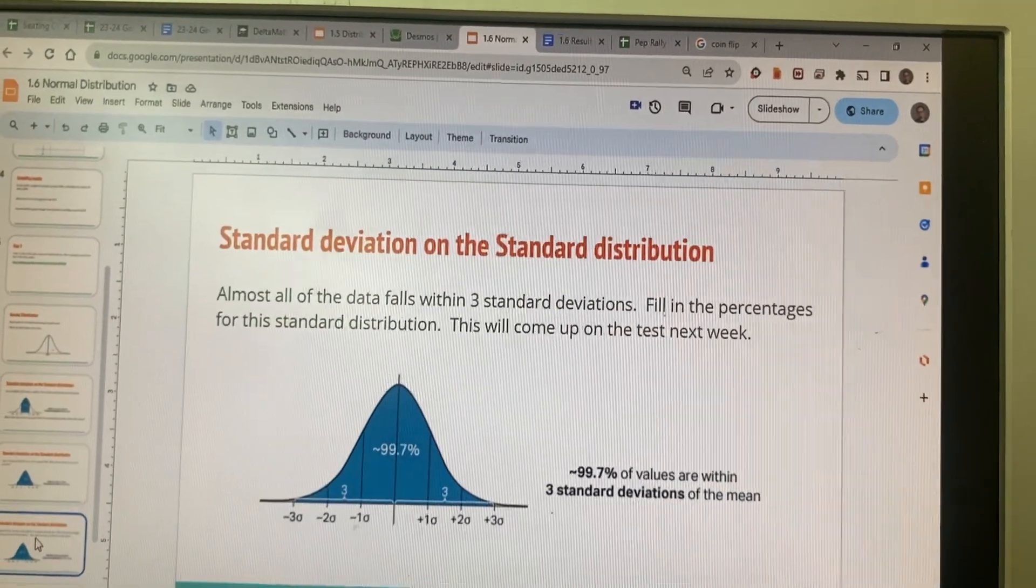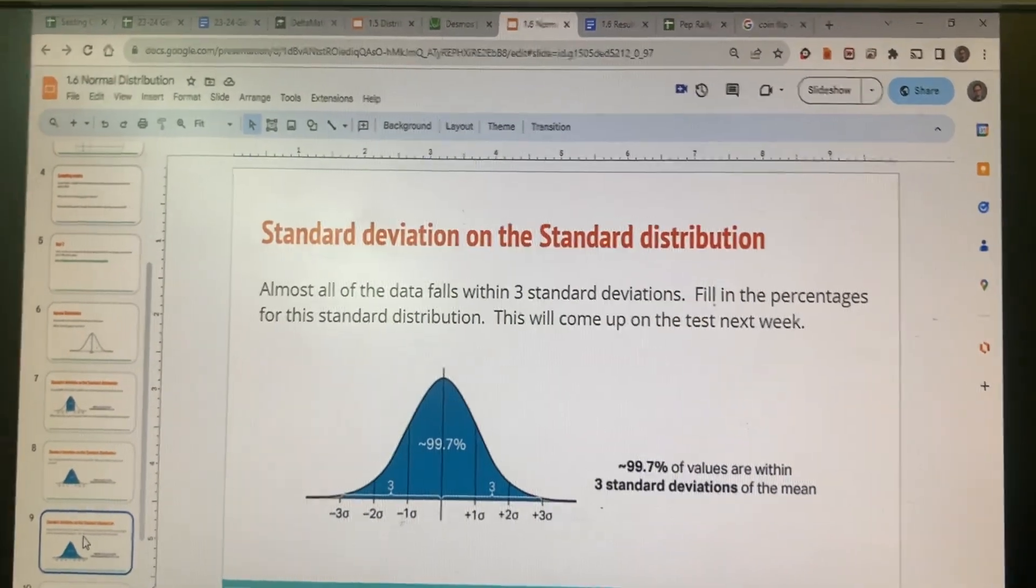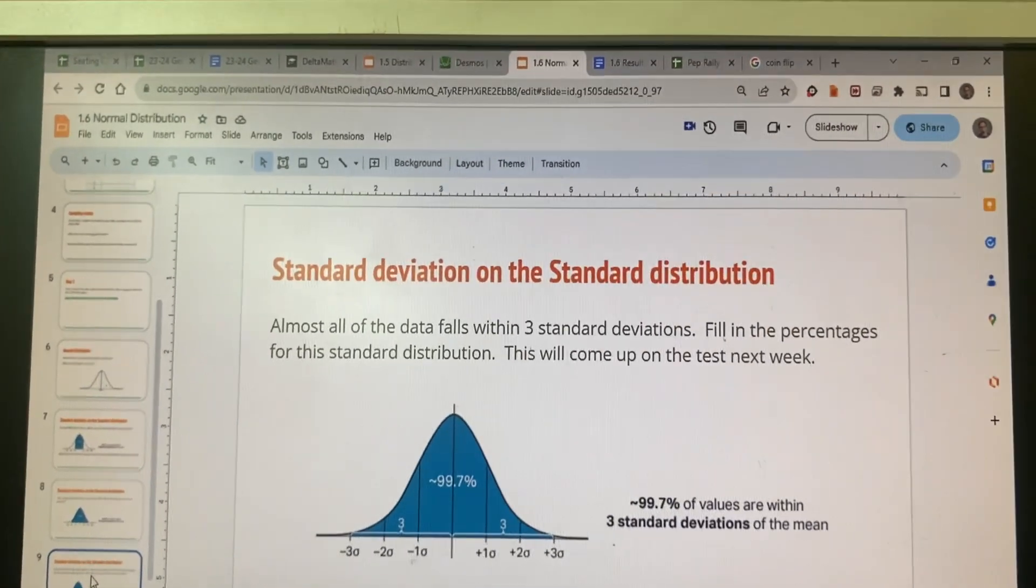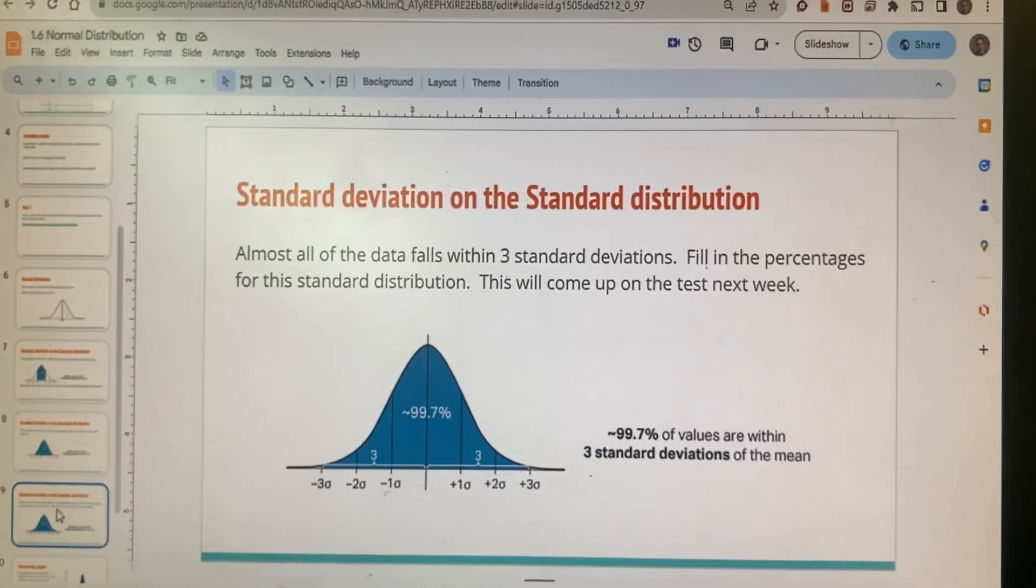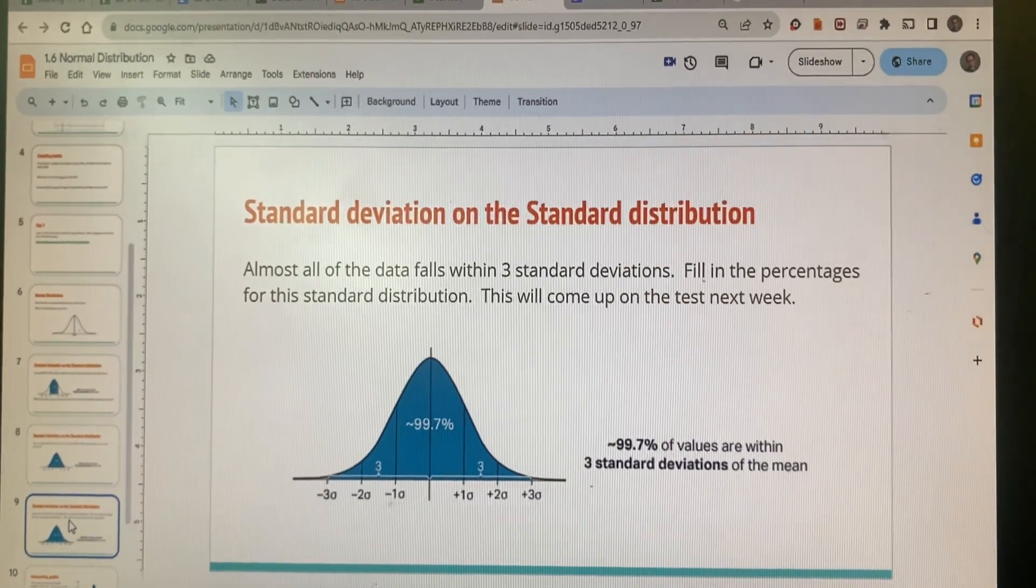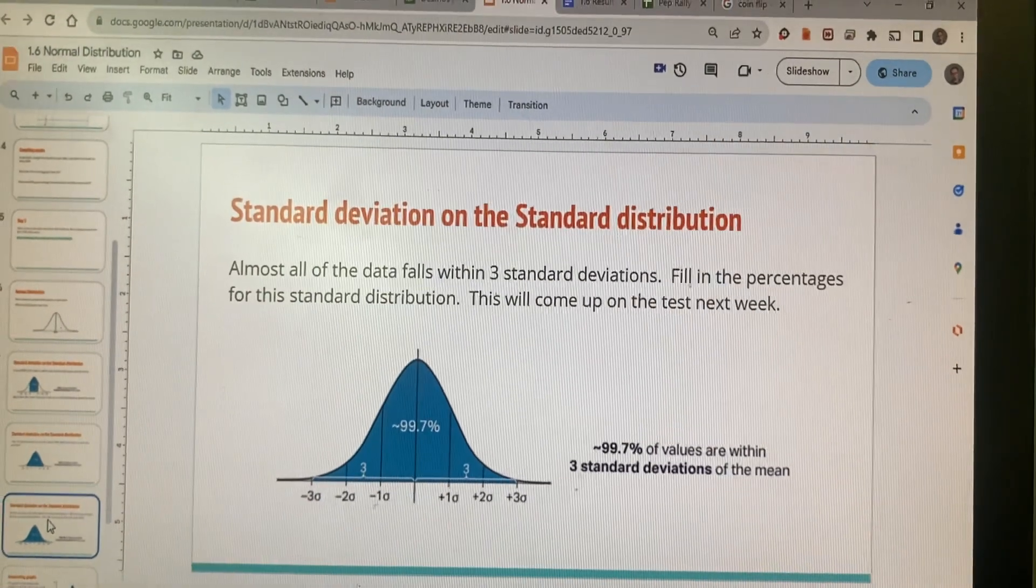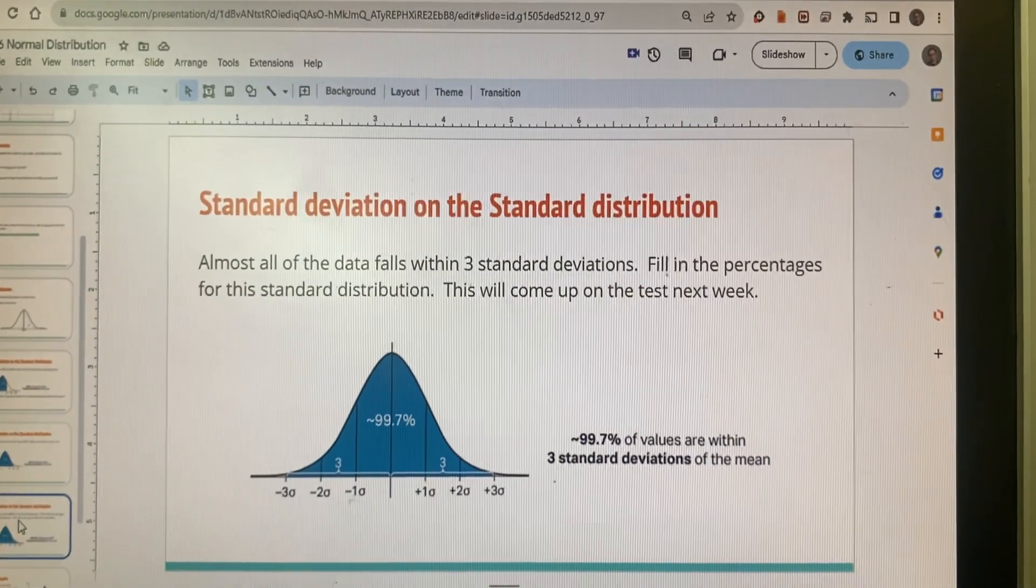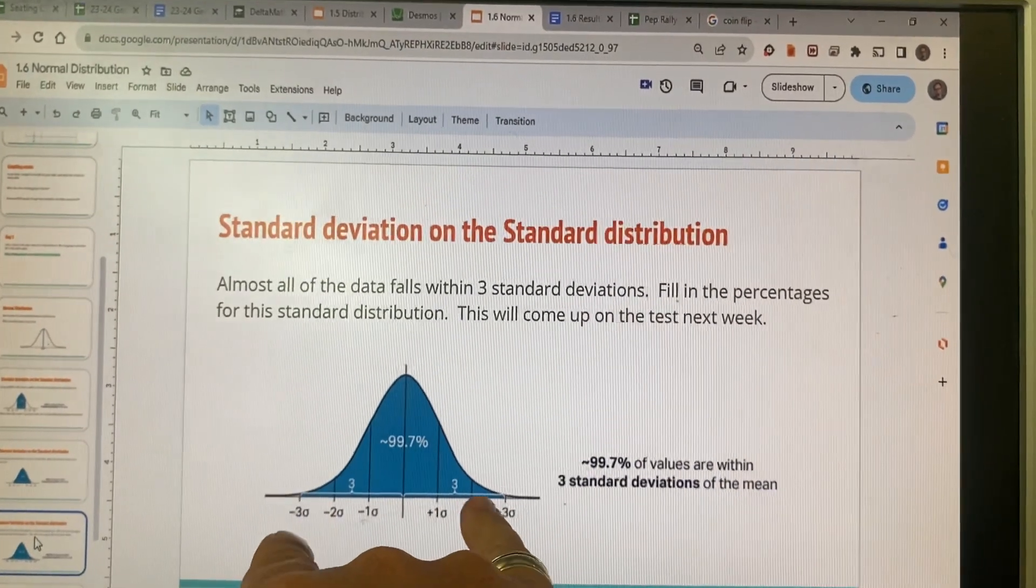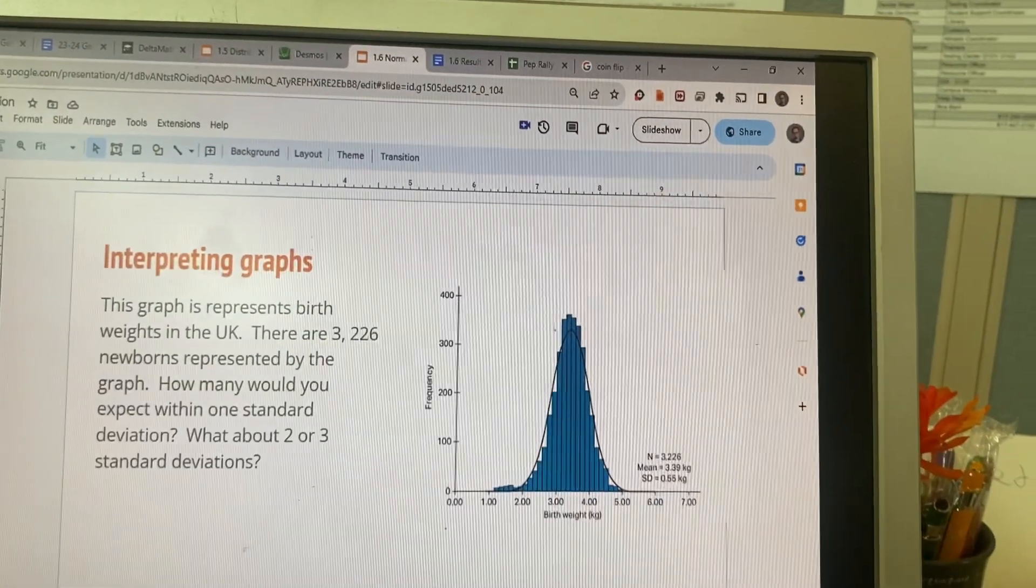And then here on slide number nine, we have 99.7% of the values are within three standard deviations of the mean. So if you're more than three standard deviations away in either direction, that's very exceptional, either exceptionally good or exceptionally bad. 95% taken away from 99.7% is going to be 4.7% to split between these two. So that's 2.35% right here and 2.35% right here.